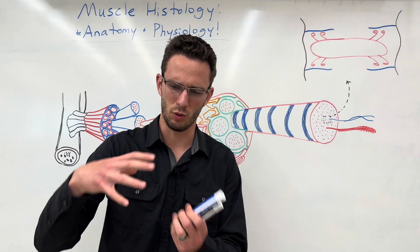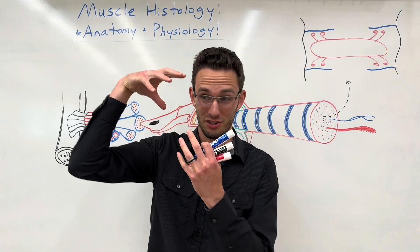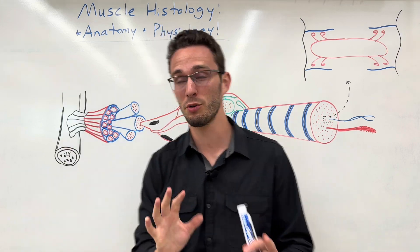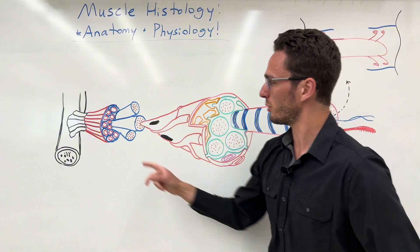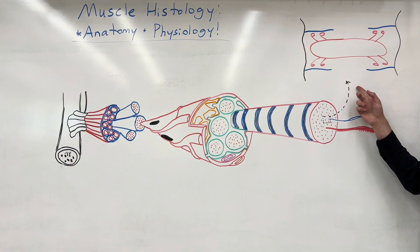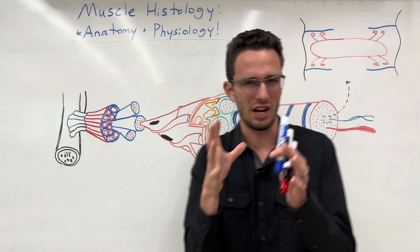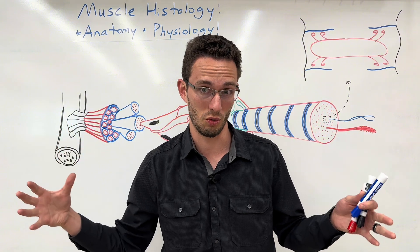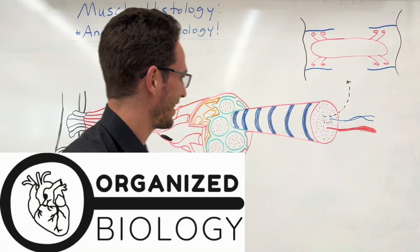Have you ever seen those Russian doll sets where you open one up and there's another one, and you open that one up and there's another one, and it goes on forever? That's basically your muscle tissue. So today we're talking about muscle histology — the tissue study of the muscles. We're going to subdivide it all the way from whole muscle down into the smallest contractile unit. This is Organized Biology.